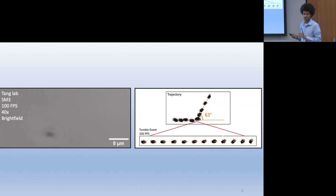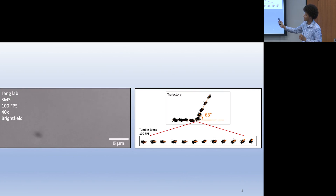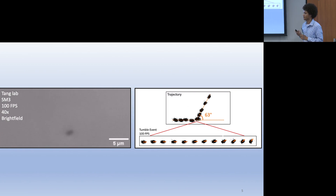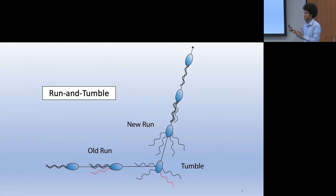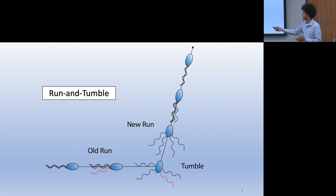When we look under the microscope, this is a movie of SM3 under phase contrast microscopy at 40x and 100 frames per second. You can see it does a very prototypical run-and-tumble motion: it comes in from the left on a run, pauses, rotates, and goes off into another direction. This is the frame-by-frame trajectory — it comes in and then goes off at 63 degrees. When all flagella turn counterclockwise, SM3 maintains its bundle. As soon as one switches to the clockwise configuration, the bundle dissociates and the cell reorients itself.